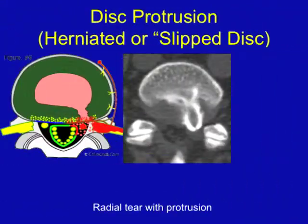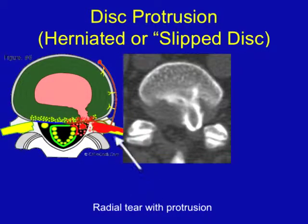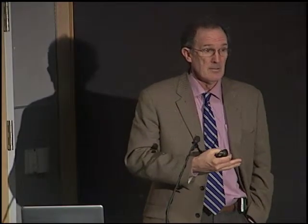This same disc herniation can occur and often does laterally, compressing a nerve root before it goes out the neuroforamen, causing pain down the leg. This is sciatica. And depending on which nerve is involved, it may be in the upper leg, the lower leg, or the entire leg and foot.